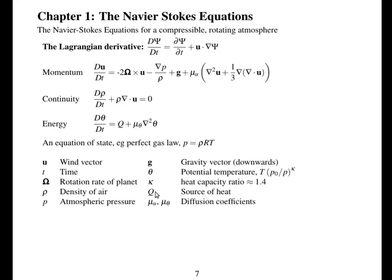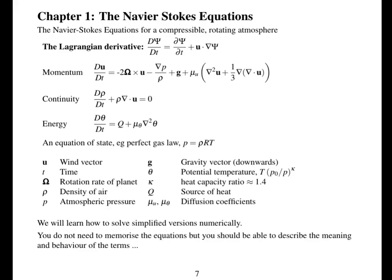Q is sources of heat. For example, sources of heat from the sun and due to latent heat release when water evaporates. And there are two diffusion coefficients here. So we're going to learn how to solve simplified versions of these equations numerically. You don't need to memorize these equations, but you should be able to describe the meaning and behavior of the terms.